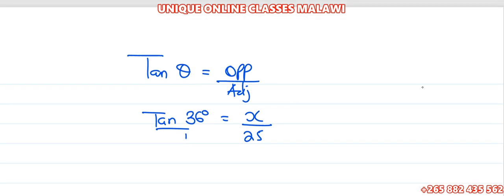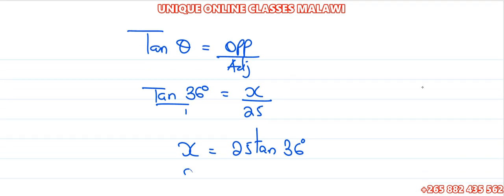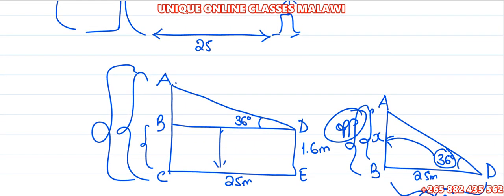Cross multiplication: x is equal to 25 times tan(36°). 25 times tan(36°) — the answer is 18.16 meters. Remember, our question asked us to find the height of the tree, so the height of the tree is approximately 18.16 meters.